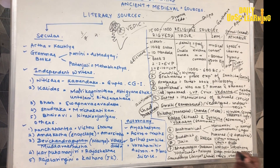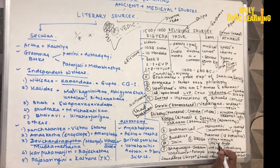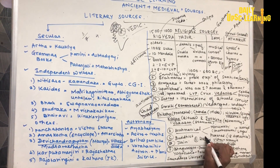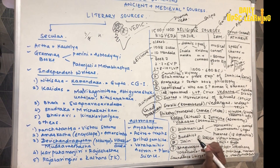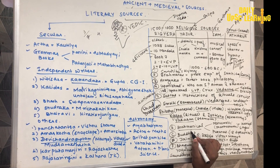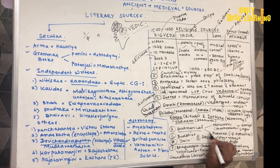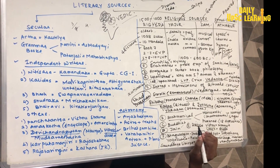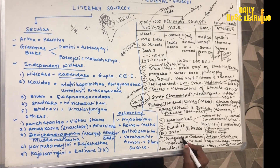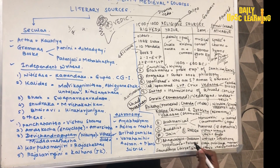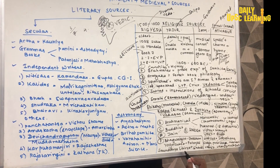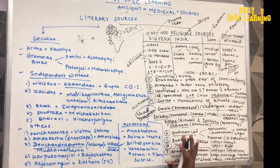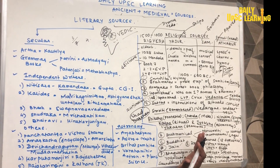The third part is Buddhist literature. Guys, Buddhist, Jain, and foreign sources — I will make a different video on these, which I will cover more intensively. Every year there will be a question on either Buddhism, Jainism, or foreign literature.